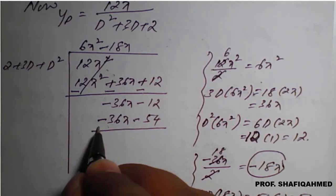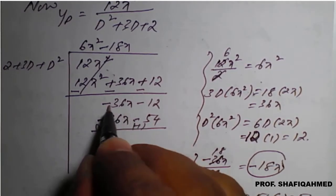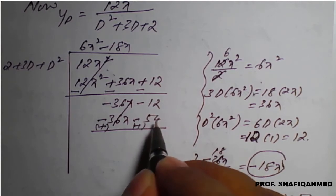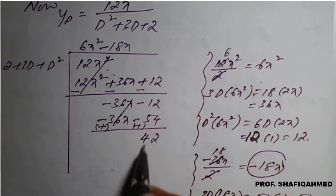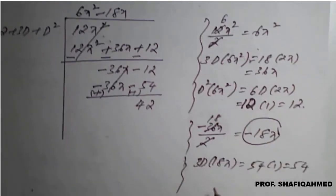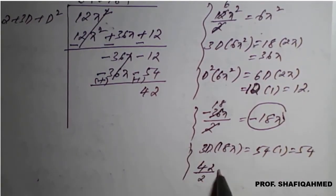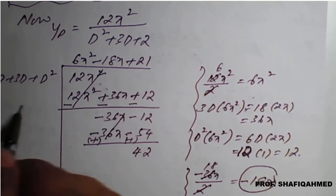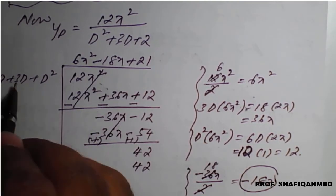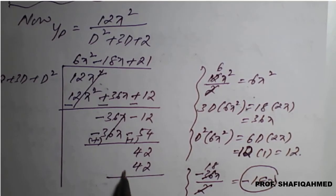Change the sign: plus 36x and minus 36x cancel. Minus 12 plus 54 gives 42. Divide 42 by 2 to get 21; write plus 21 in the quotient. Multiplying back: 2 times 21 is 42, and differentiation of a constant is 0. Change the sign: 42 minus 42 gives remainder 0. Division is complete.